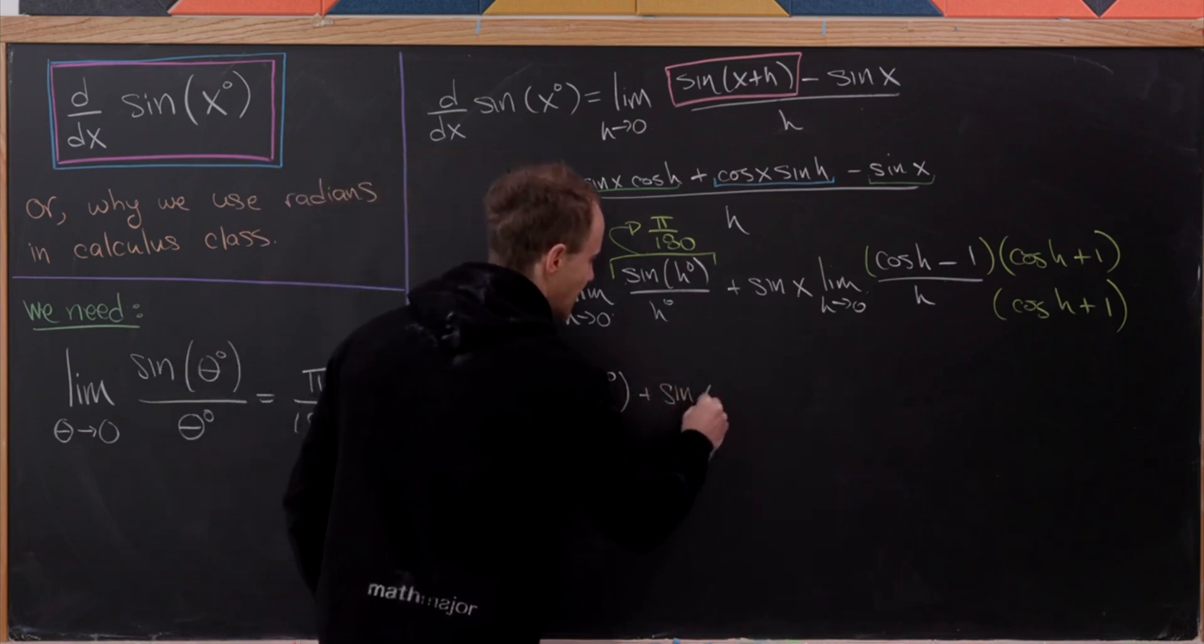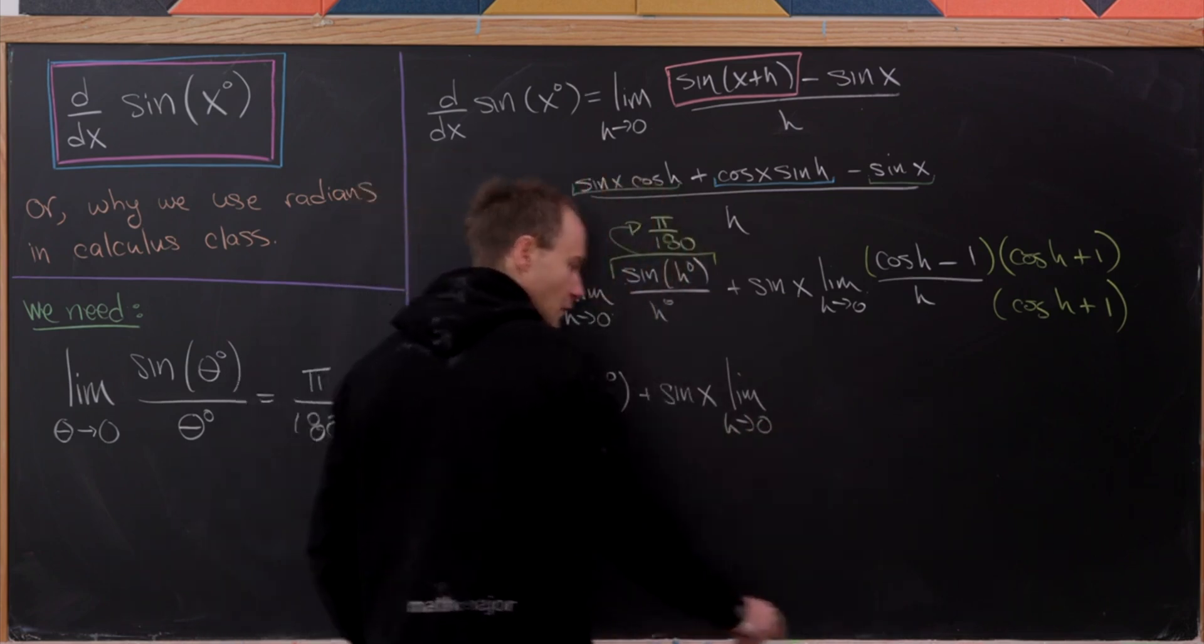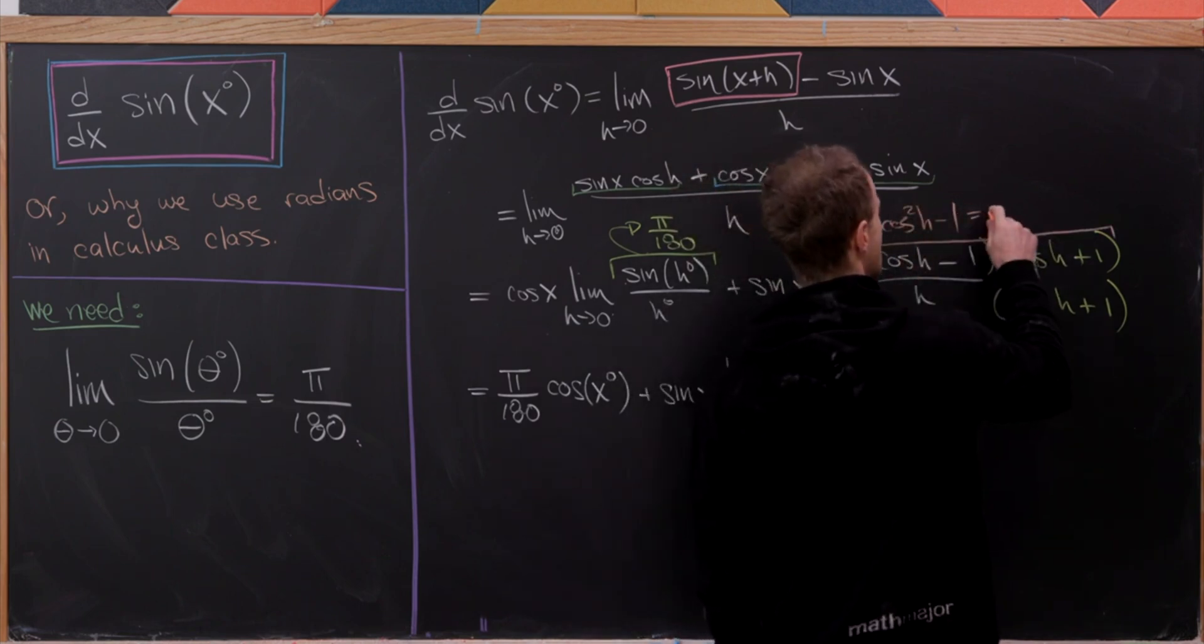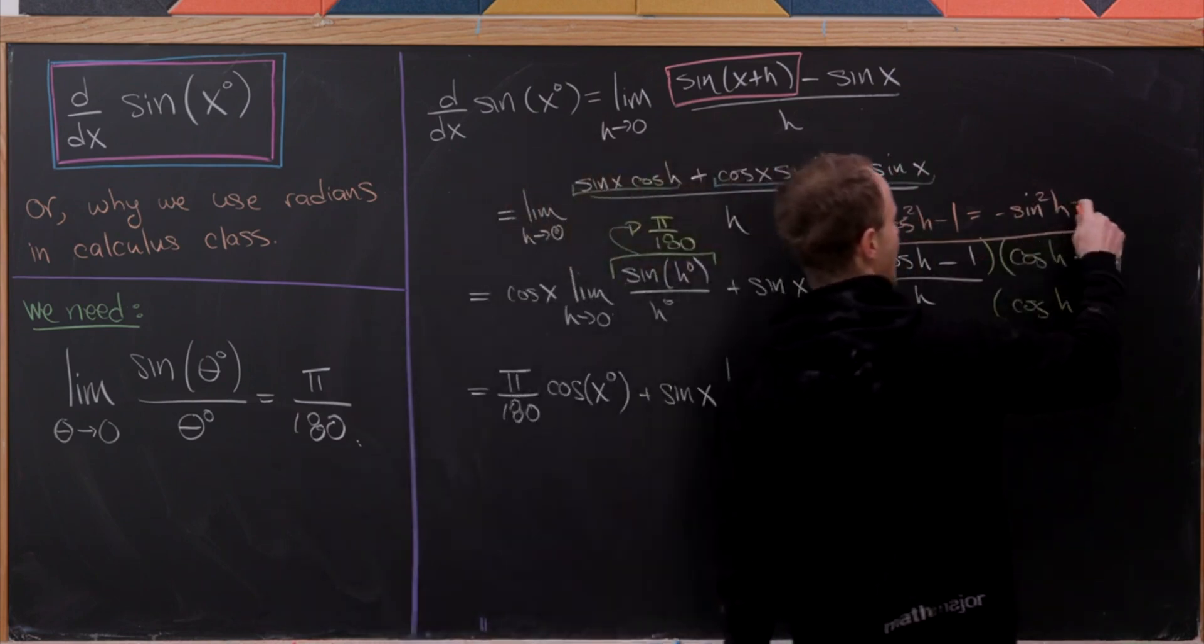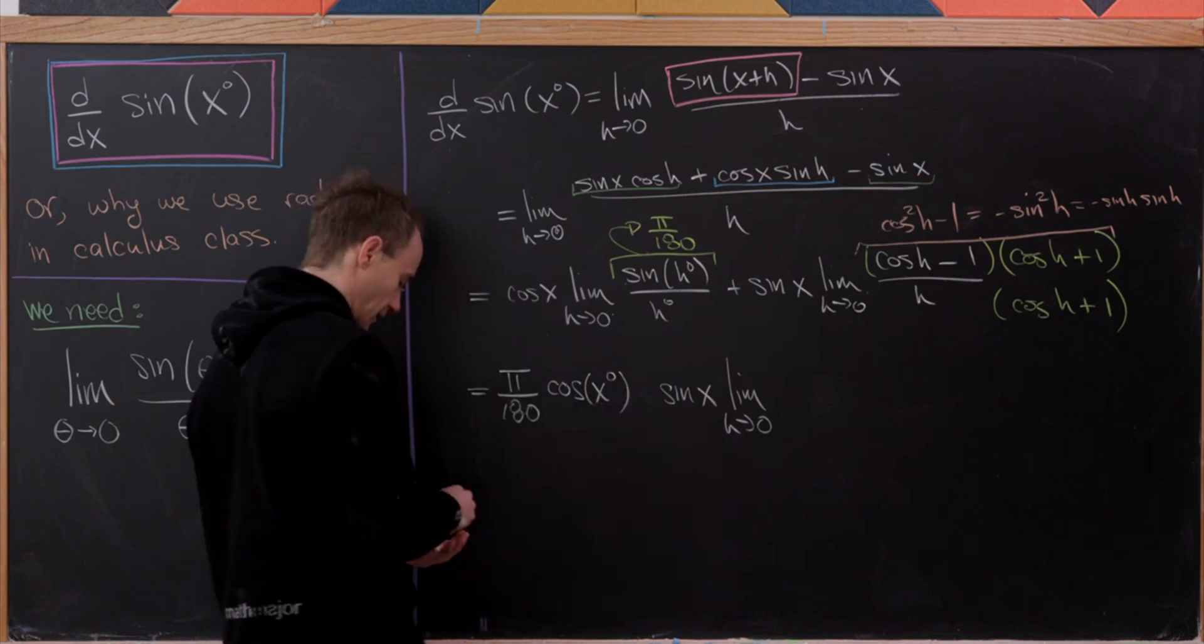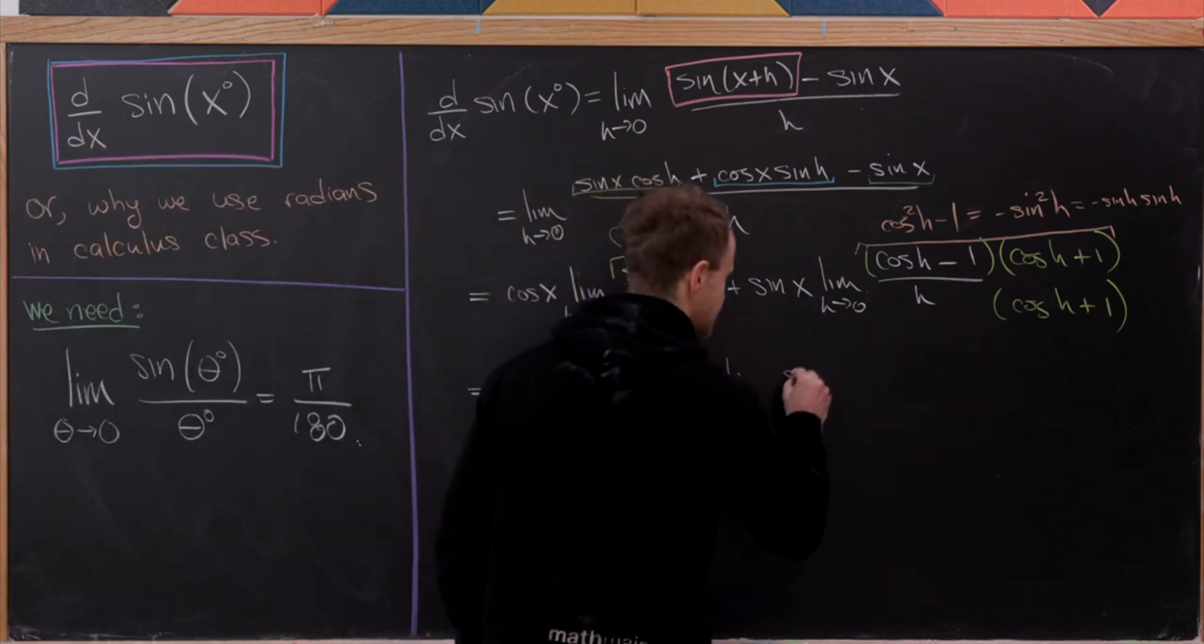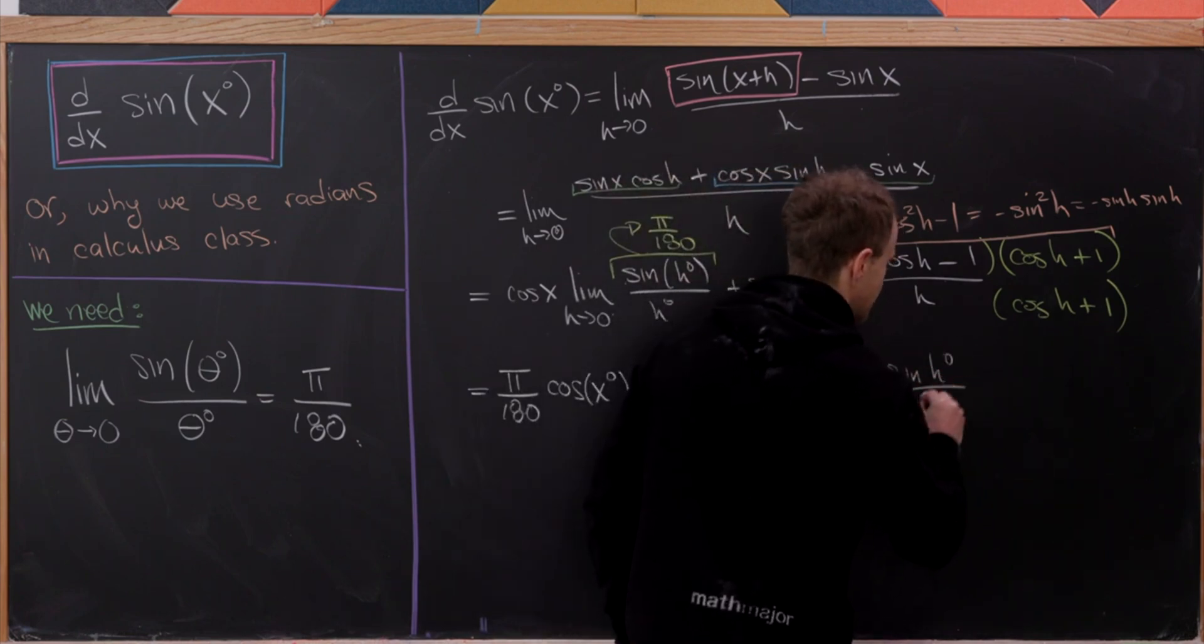And then we'll have plus sine of x times the limit as h goes to 0 of—well, let's kind of do this on the side. So multiplying out this turns into cosine squared of h minus 1, which is negative sine squared of h, which I can in fact write as negative sine of h times sine of h. And that's what I'm going to do here. But I'll take the minus sign and I'll bring it out here. So there we've got this minus sign here, and then we can write this as sine of h degrees over h degrees times sine of h degrees over cosine of h degrees plus 1.